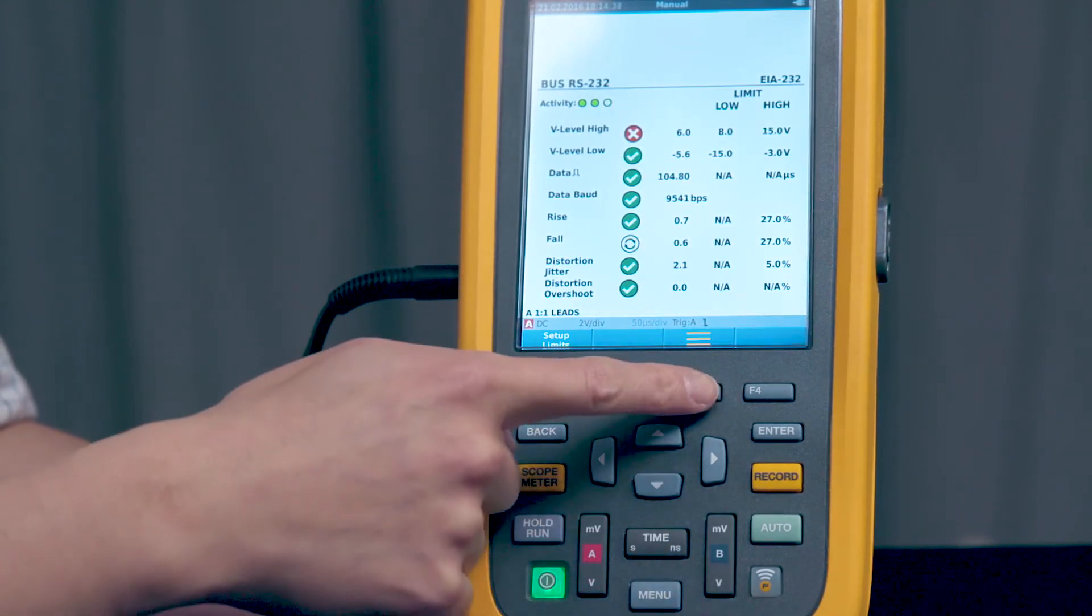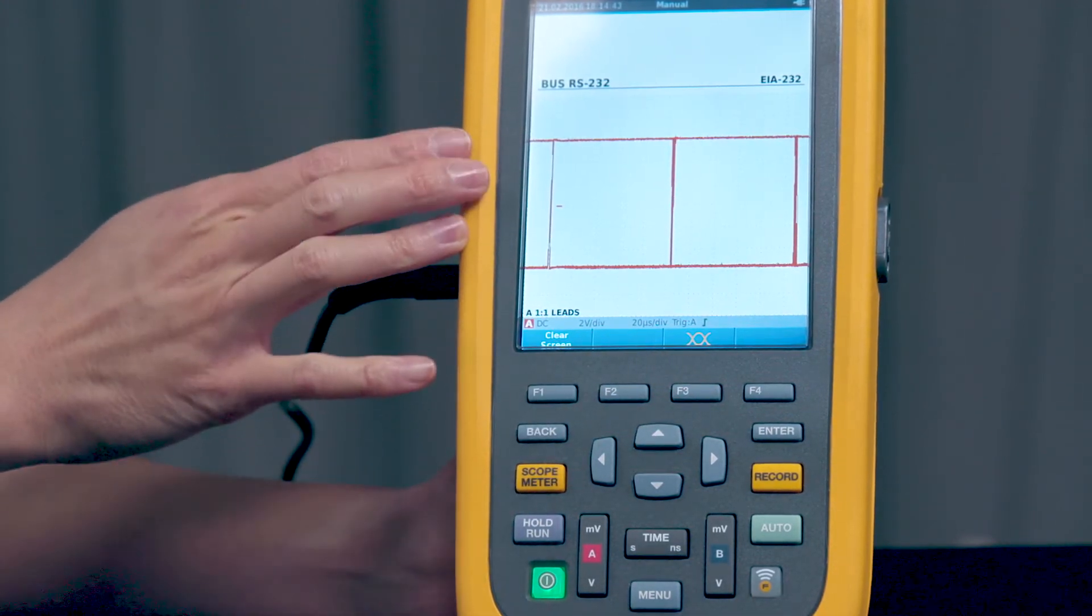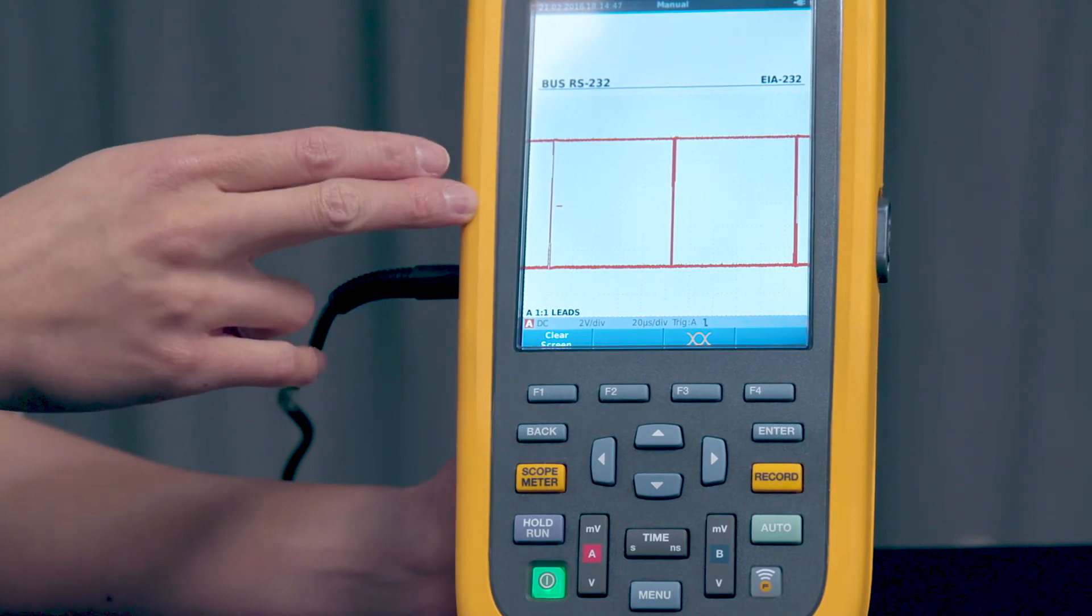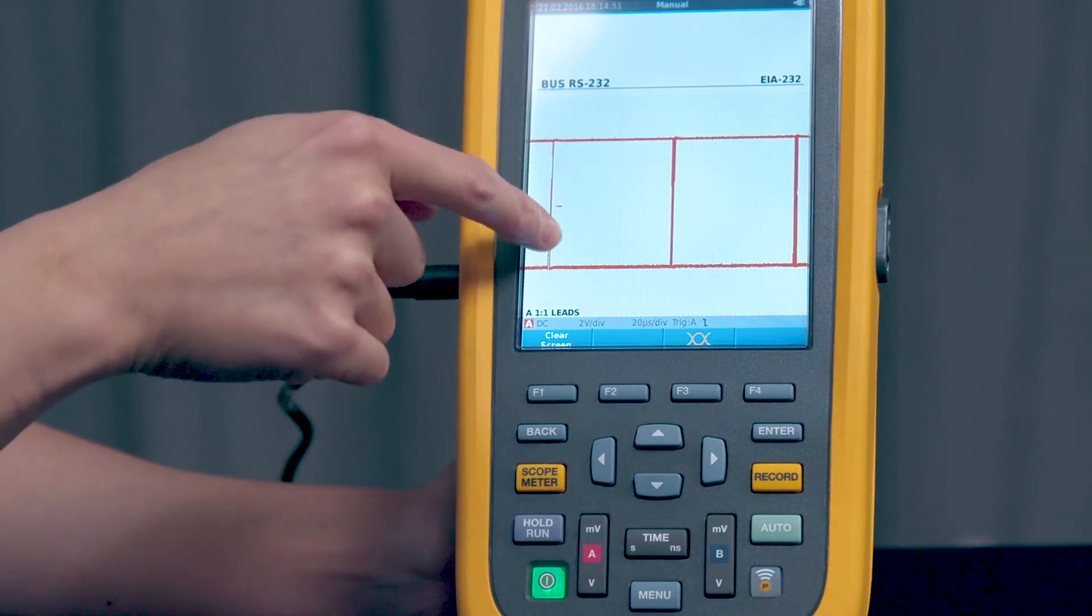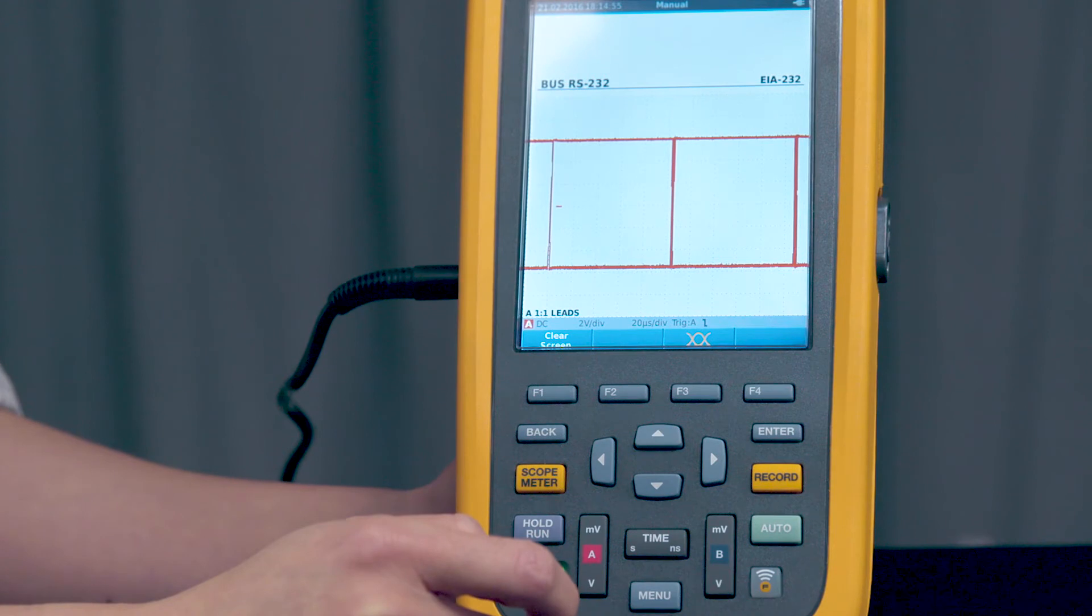If you press F3 you can see the eye pattern. And in this screen the waveform is shown for one bit time. And it's triggered on the positive and negative. And you'll notice here that your eye is wide open and it's nice and clean looking. So that means you have a good signal.